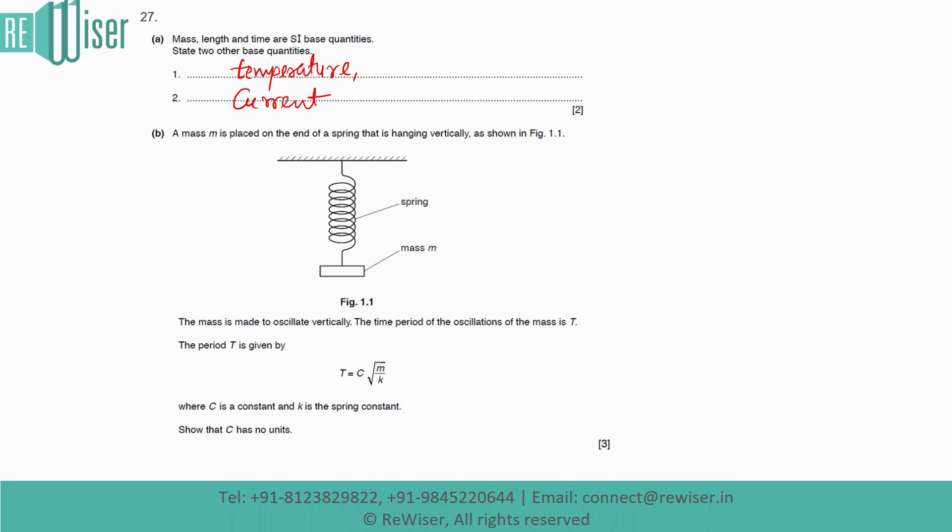So the B part is: a mass M is placed on the end of a spring that is hanging vertically as shown in figure 1.1. The mass is made to oscillate vertically. The time period of the oscillation of the mass is T. The period T is given by T = C√(M/K), where C is a constant and K is the spring constant, so that C has no units.